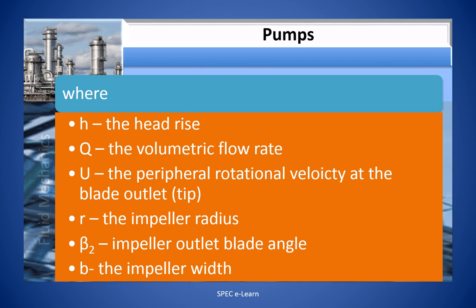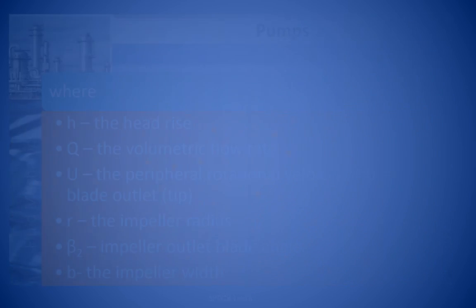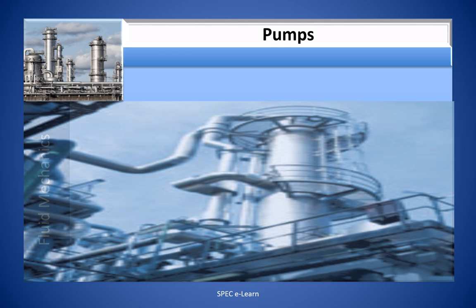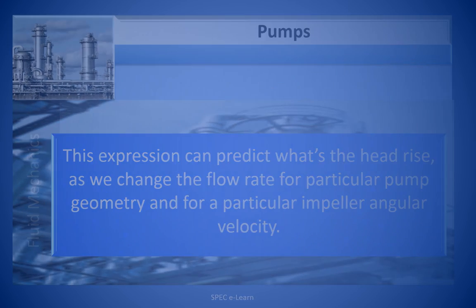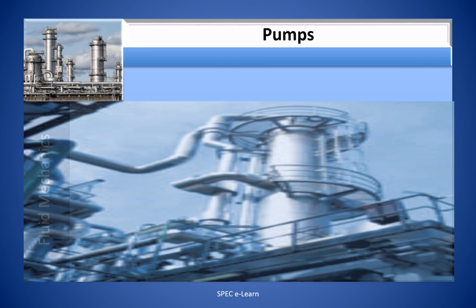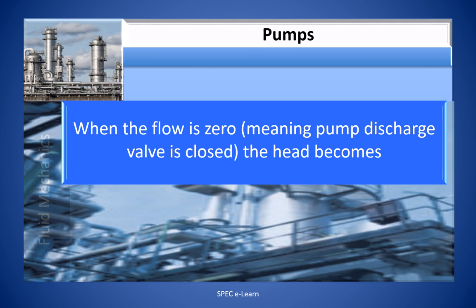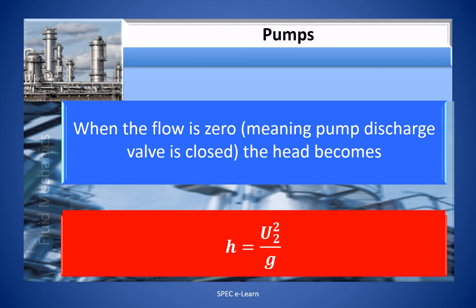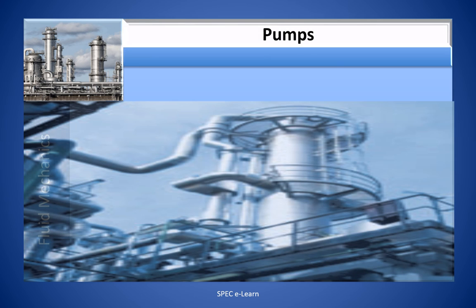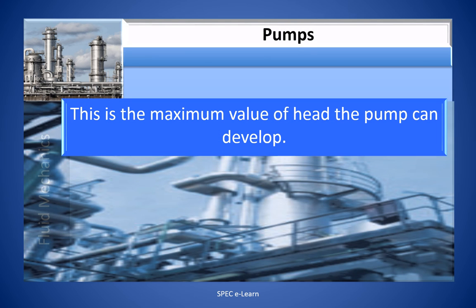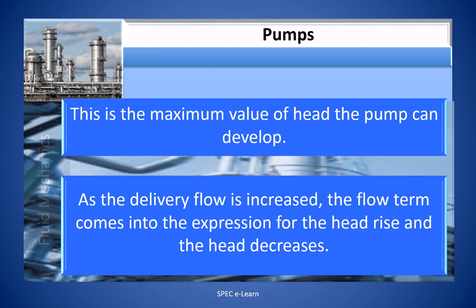This expression can predict the head rise as we change the flow rate for a particular pump geometry and a particular impeller angular velocity. When the flow is zero — meaning the pump discharge valve is closed — the head becomes H = U2² / g. This is the maximum value of head the pump can develop. As the delivery flow is increased, the flow term comes into the expression for head rise and the head decreases.